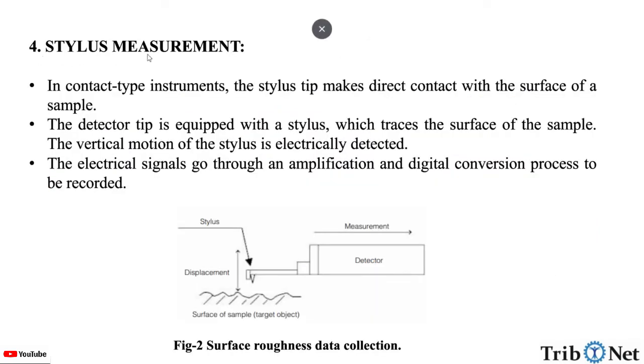Now let us understand stylus measurement. In stylus measurement, it is a contact type instrument where the stylus tip makes direct contact with the surface of a sample. The detector tip is equipped with a stylus which traces the surface of the sample. The vertical motion of the stylus is electrically detected.